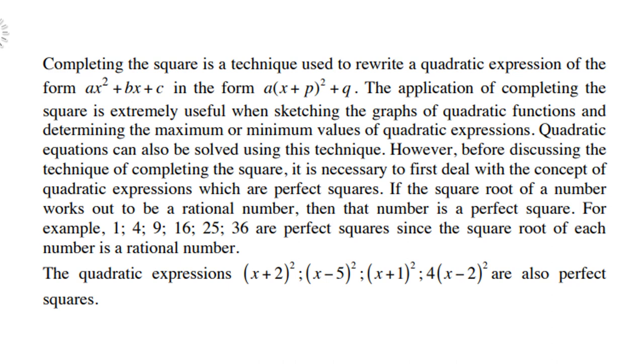If the square root of a number works out to be a rational number, then that number is a perfect square. For example, the numbers 1, 4, 9, 16, 25, 36, etc. are all perfect squares since the square root of each number is a rational number.